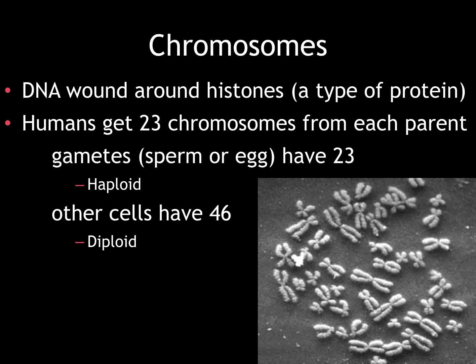DNA is wound around histones, which are a type of protein that essentially allow us to pack a ton of genetic material into a really small space inside our cells. Humans get 23 chromosomes from each parent, meaning that all adult cells in our body have 46 chromosomes. We call these cells diploid.